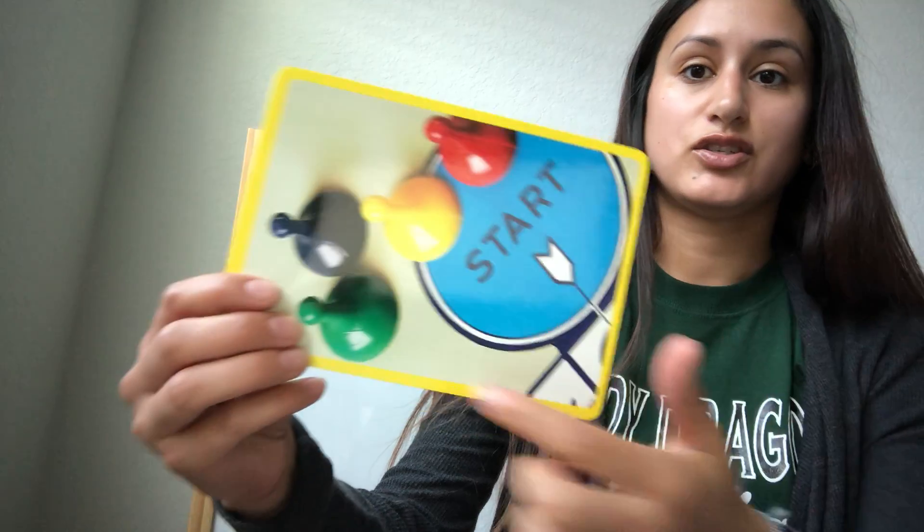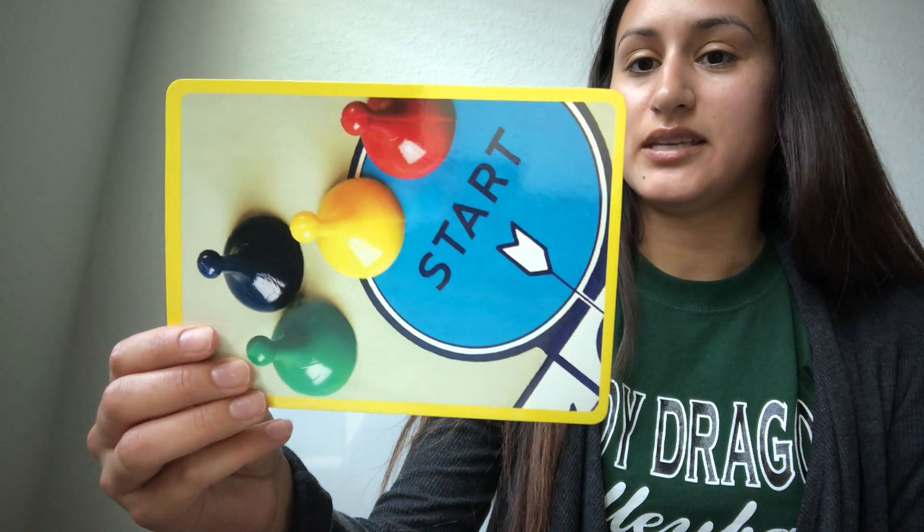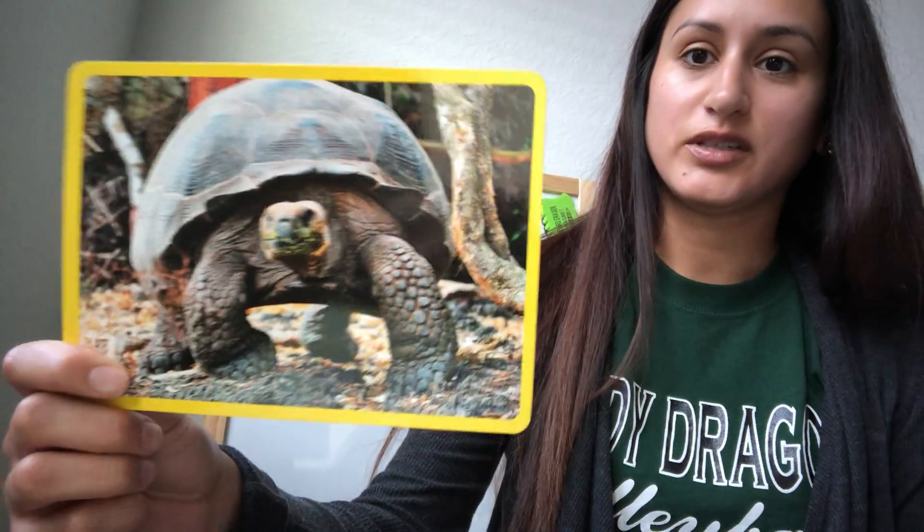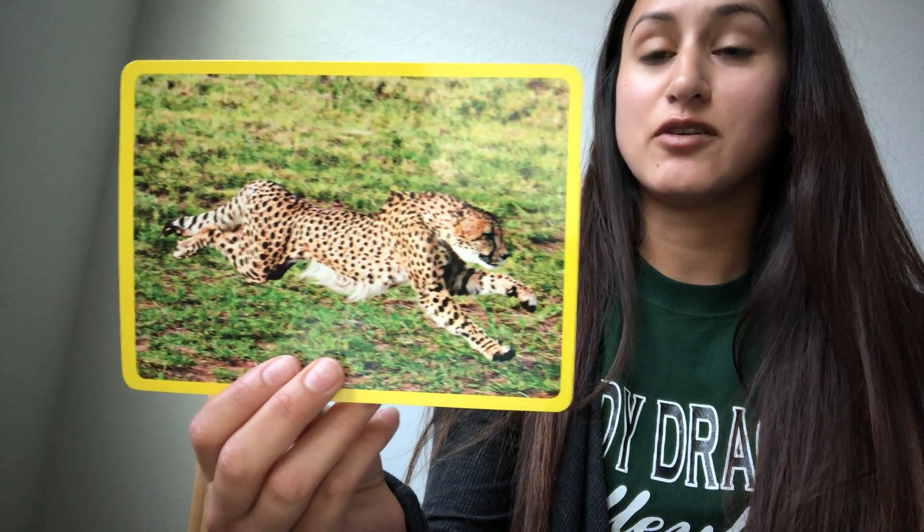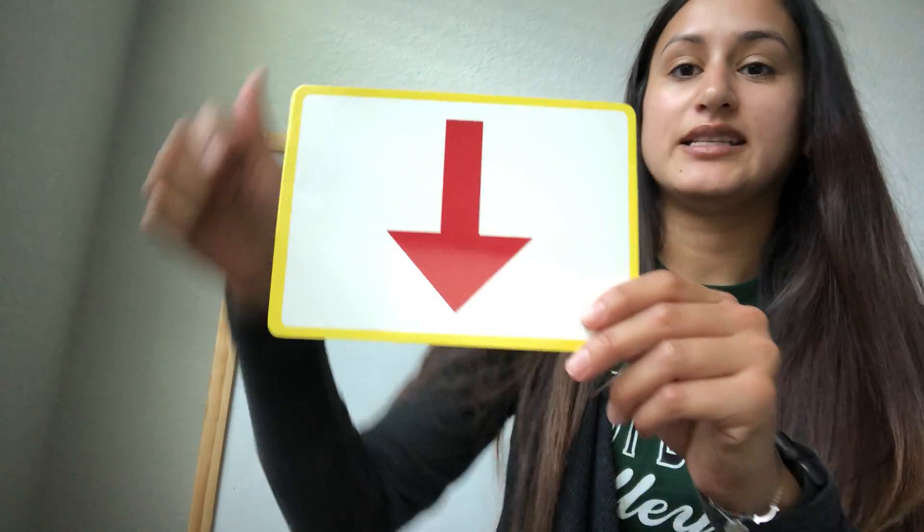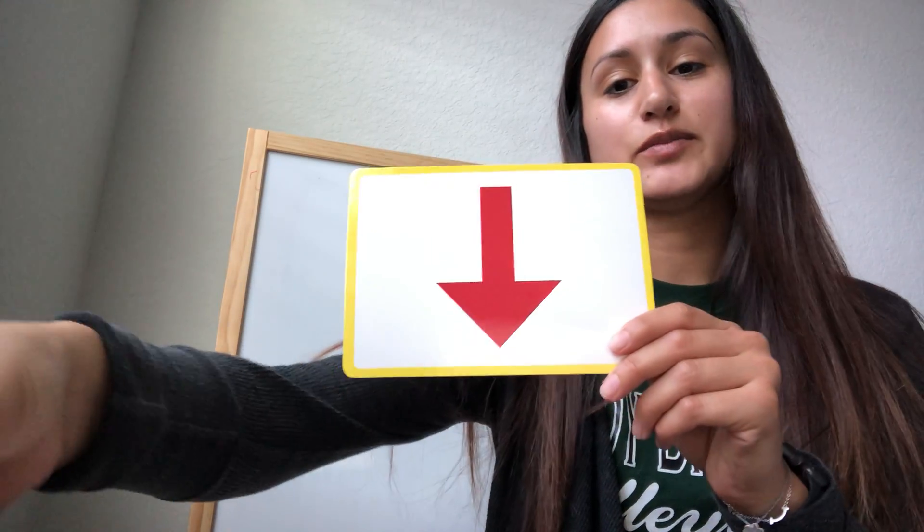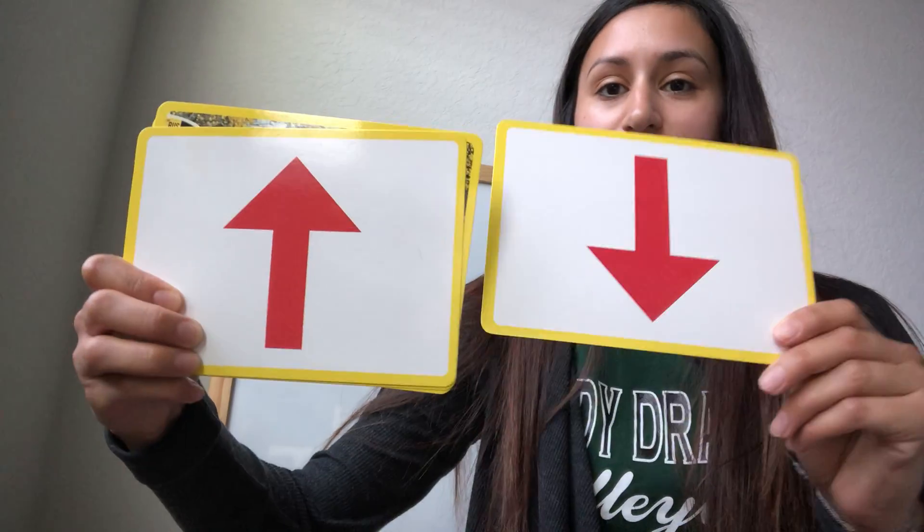This is start, and it means to begin to do something. This one is a turtle, but it's showing you that he's slow. He moves very slow, and that means not fast or quick. And this is a cheetah, and he's moving fast, and fast means to move quickly. And this one is an arrow pointing down, and down means in a lower place. So we have up and down.